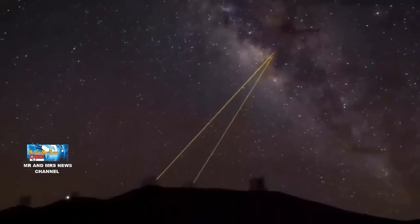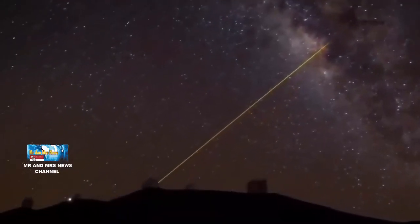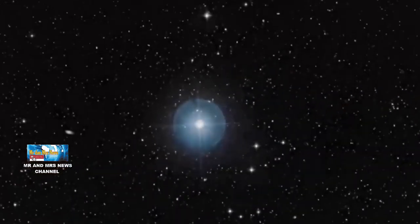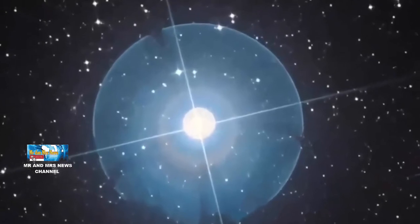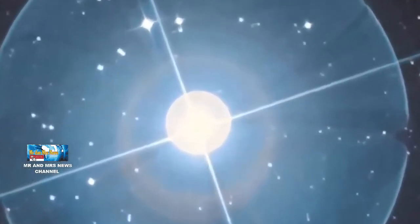Bintang itu ditemukan menggunakan metode kecepatan radial. Teknik yang digunakan untuk menemukan exoplanet ini lebih efektif dalam menemukan dunia raksasa seperti planet gas yang mengorbit pada jarak yang terlalu panas untuk air cair.